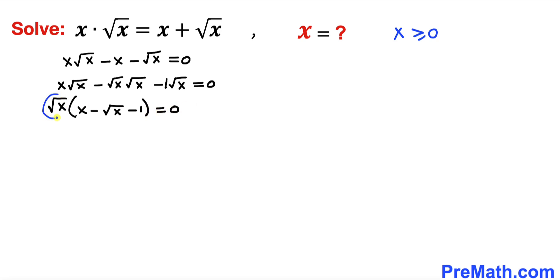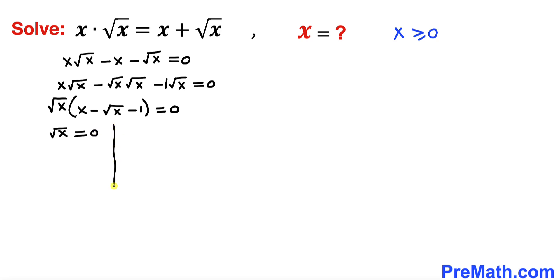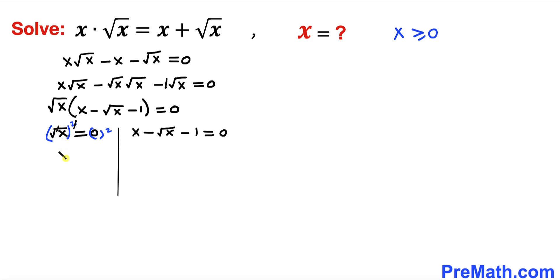We now have two factors equal to 0, so we can separate them. The first equation is square root of x equal to 0. Let's undo this square root by squaring both sides — the square and square root cancel, and 0 squared is 0. So one of our solutions is x equal to 0.